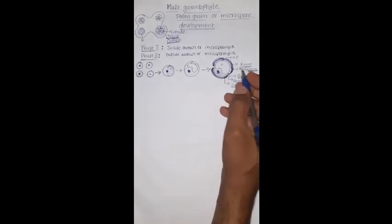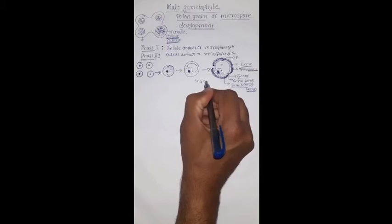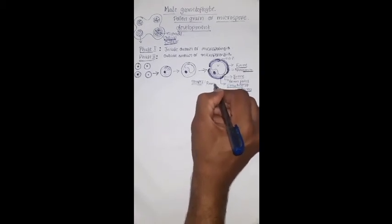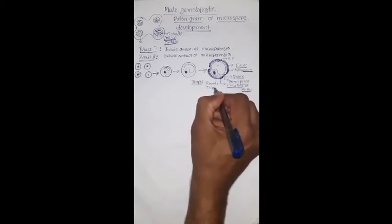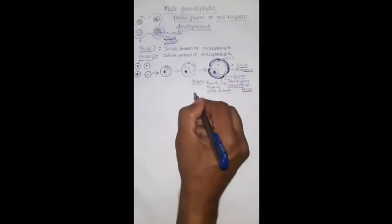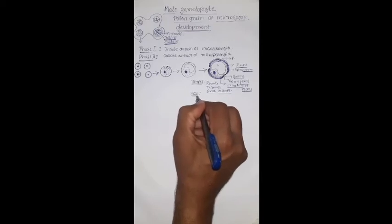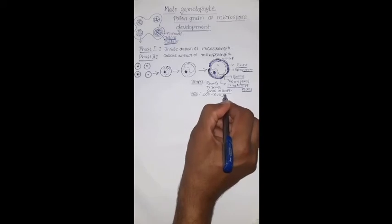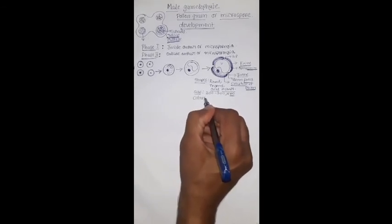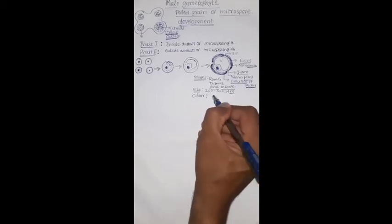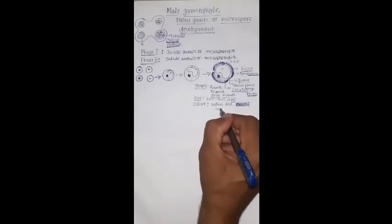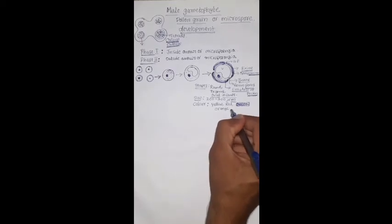Now we will see the shapes of pollen grains. Usually, pollen grains occur either round, globose, trigonal, or oval in shape. The size ranges usually between 200 to 300 micrometers. The color may be yellow, red, orange, or colorless.